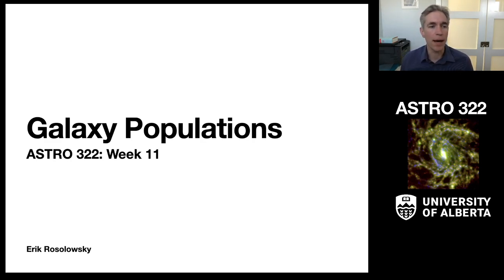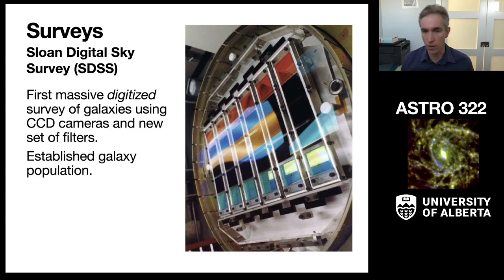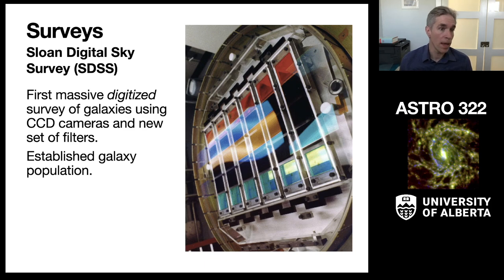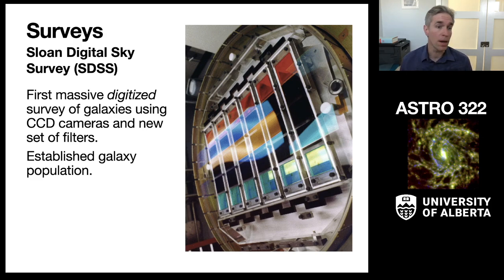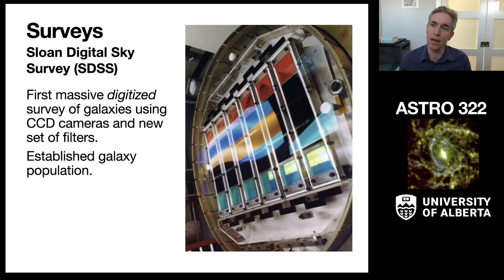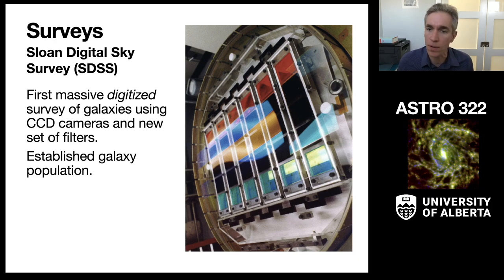To get things started, I want to lay out some of the observational basics for this subject. The observational basics really started to come into fore with the Sloan Digital Sky Survey, SDSS, or sometimes just called Sloan for short. This is a survey conducted in the early part of this millennium — it was really the first truly large-scale digital survey of the sky. The calibration of the Sloan Digital Sky Survey was better than anything that had come before, and it really nailed down some of the best properties of the local galactic population.